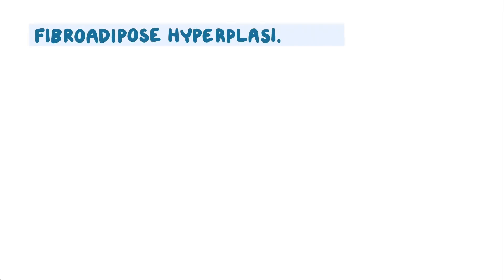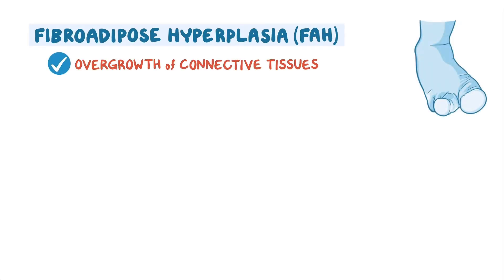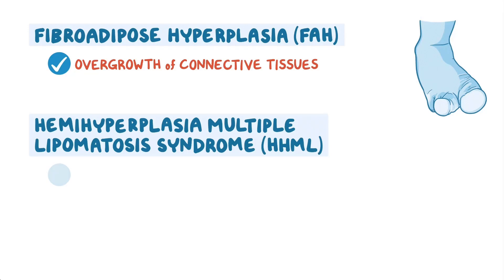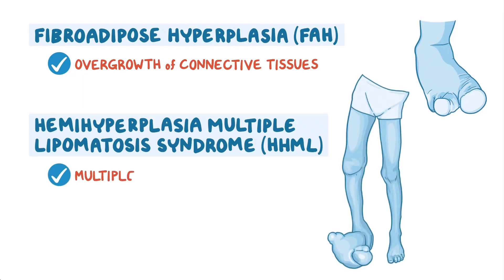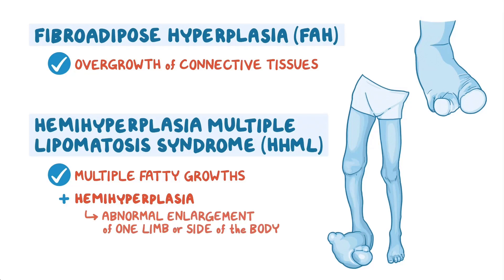Fibroadipose hyperplasia, or FAH, results from overgrowth of connective tissues. In a related disorder, hemihyperplasia multiple lipomatosis syndrome, or HHML, is characterized by multiple fatty growths, along with hemihyperplasia, which is abnormal enlargement of one limb or one side of the body.